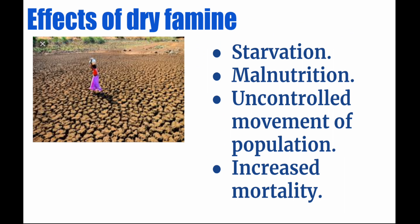Uncontrolled movement of population means that if a particular area is suffering from famine, people do not stay there — they leave and go to another village or area. The last effect is increased mortality. Mortality means the death rate — because of no food and no water, human beings, plants, and animals die, increasing the mortality rate.